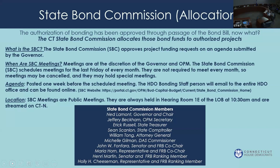The state bond commission approves project funding requests on an agenda submitted by the governor. Meetings are at the discretion of the governor and OPM — the commission is scheduled to meet on the last Friday of every month, but they're not required to meet every month. You'll often see meetings on the CGA website calendar that get canceled. They can also hold special meetings — there was a special meeting held this year in April that was not on the initial calendar.